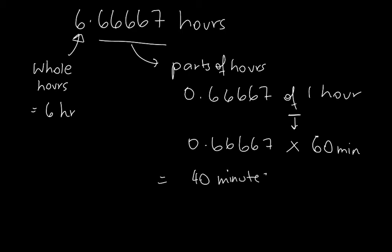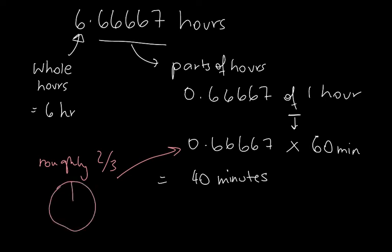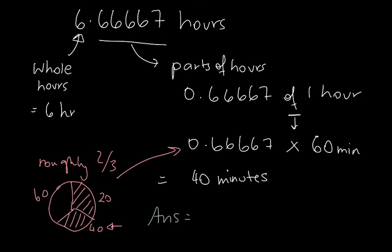That makes sense because 0.66667 is roughly 2 thirds. If we think of a clock cut into three equal pieces: one piece is 20 minutes, two pieces is 40 minutes, and three pieces is 60 minutes — the whole hour. So 2 thirds equals 40 minutes, which confirms our answer. The final answer for how long in this question is 6 hours and 40 minutes.